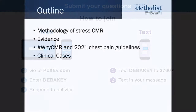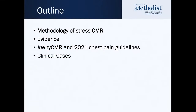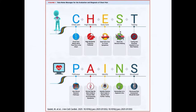So a bit of outline of what we're going to talk about. We're going to talk about the methodology of stress MRI, some of the evidence that grew exponentially within the past 20 years or so. We'll talk about the chest pain guidelines, which just came out a few weeks ago, and we'll go through cases. I'll start with the guidelines because this is a recent and very important document that highlights changes in the way we evaluate chest pain patients and choose the best test for the right patient.